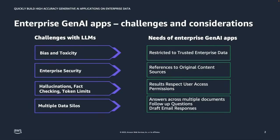Some of the challenges are enterprise security — you really want enterprise applications to be secure. Large language models have a tendency to hallucinate, so there is a need for minimizing hallucinations. Also, large language models are trained on very large amounts of data, and the source of that data may not be authoritative, whereas enterprise applications need to run only on enterprise data, so there has to be some fact checking. There is also a token limit — the amount of data you can send to large language models.